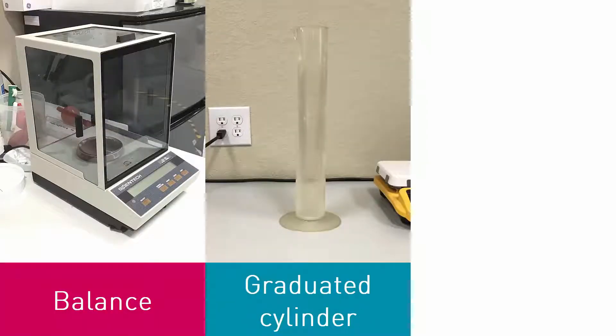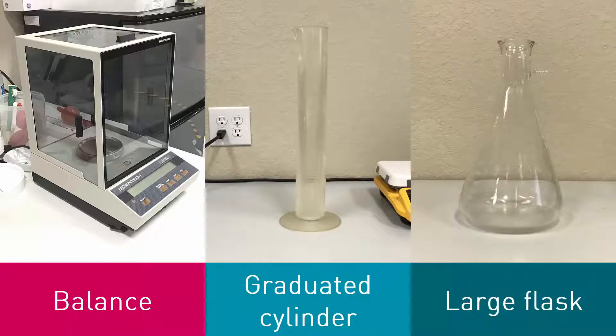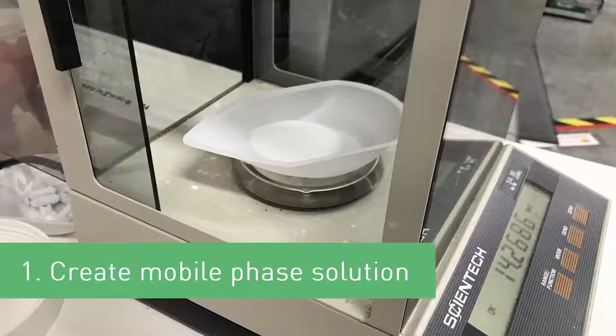Other lab items that might be helpful are a balance to weigh out any added salts, a large graduated cylinder to measure a known amount of solvent or additive, and a large flask for preparing the unfiltered solution. The first step is to create the mobile phase solution.